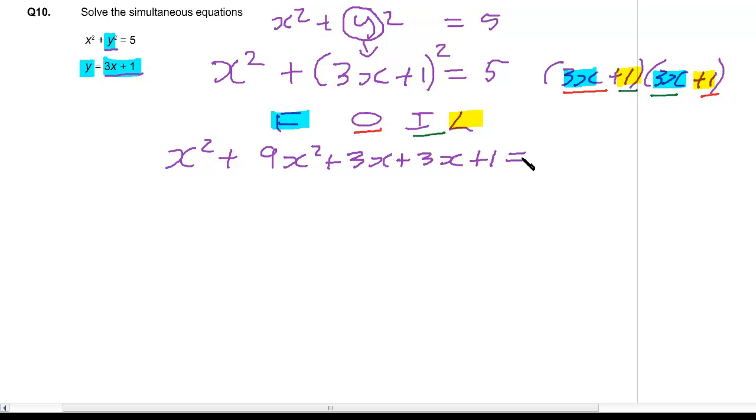And we've also got that still equal to 5. Now we can simplify all of this. We've got x squared plus 9x squared is 10x squared. 3x plus 3x is 6x plus 1 equals 5. Well, let's bring the 5 to this side. And we subtract 5 from both sides. When you get a quadratic, you get everything on the same side. You know you've got a quadratic because you've got an x squared. So minus 5 from both sides, we get minus 4.